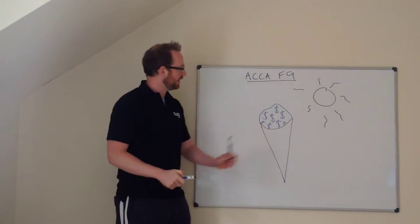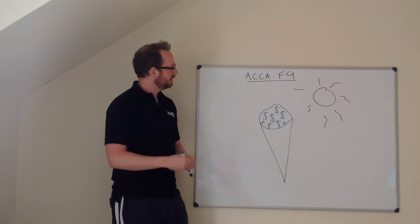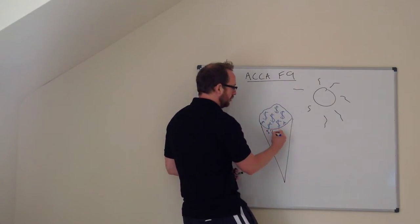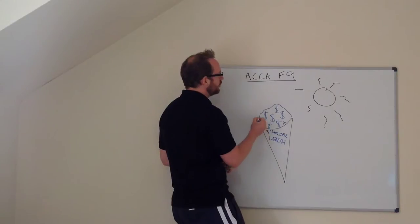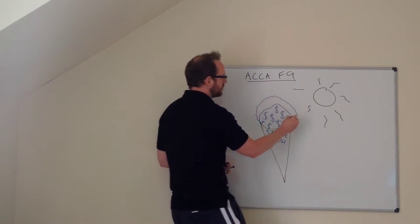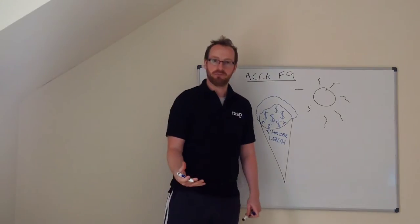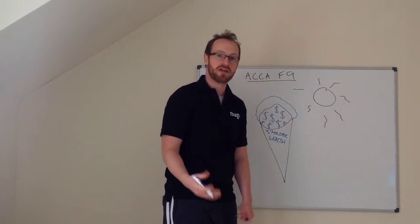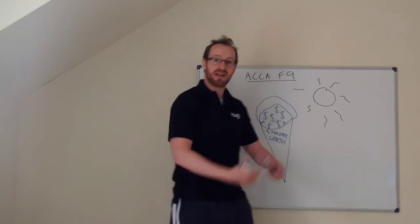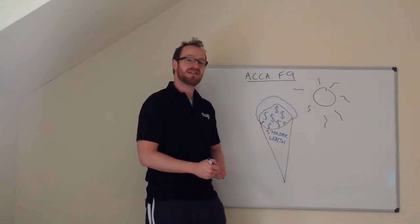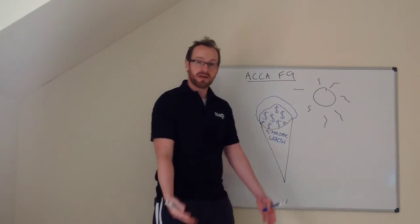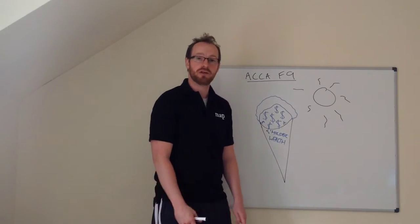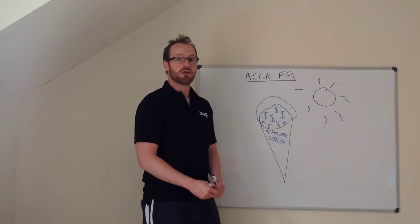So looking at this ice cream that we have for F9, this ice cream represents shareholder wealth and the core of F9 is how to increase shareholder wealth. So we want to make our ice cream bigger and bigger and bigger and get shareholder wealth increased because they own the business. We need to try and give them some return. So that's dividends and share price growth really is what we want to give them. We're the managers of the business. F9 financial management. So what are we going to do to grow that ice cream?